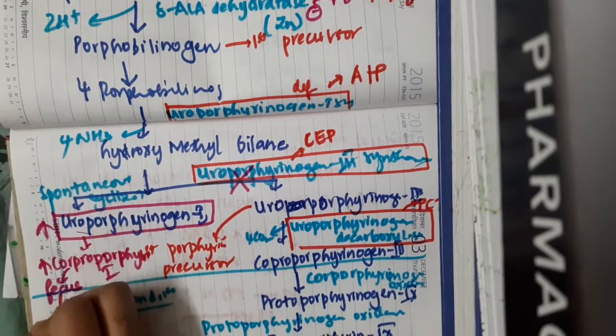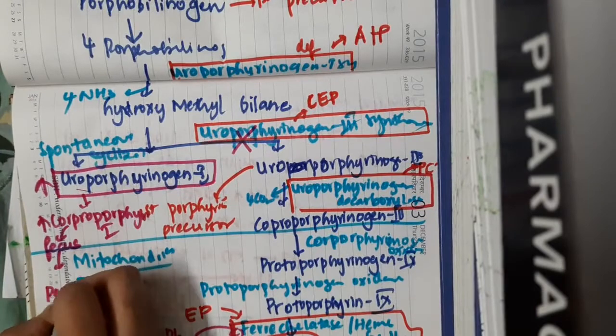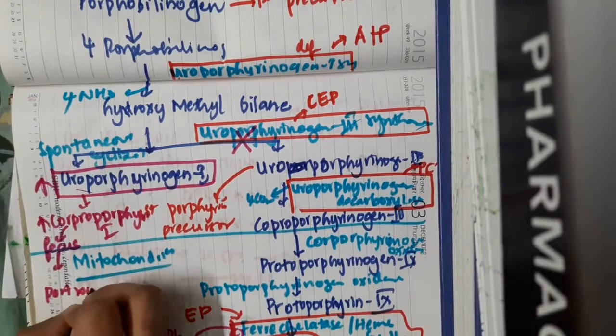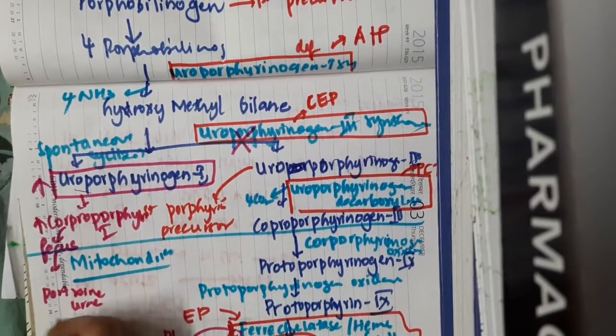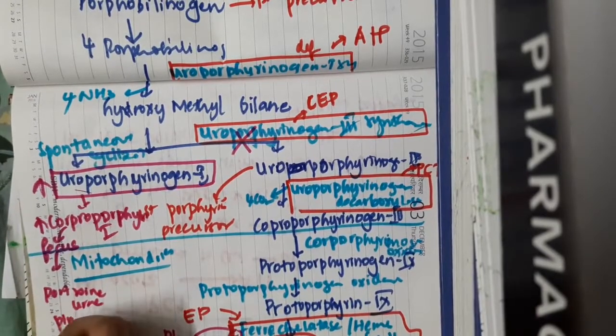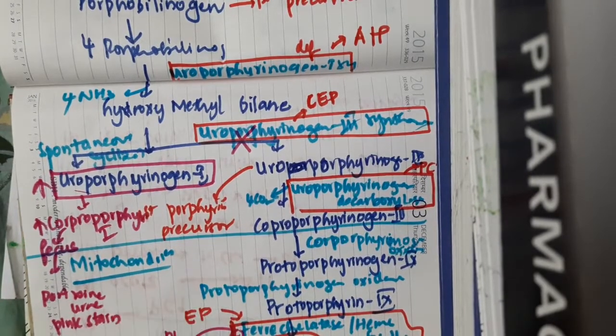Because coproporphyrin-1 is seen in feces, you can also see port-wine stained urine, and pink staining of diapers is seen due to coproporphyrin-1.